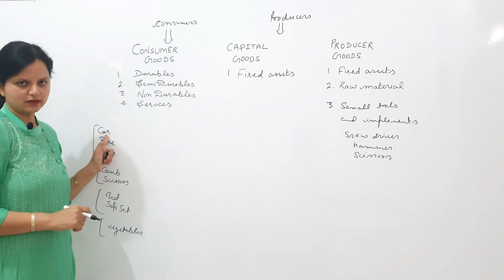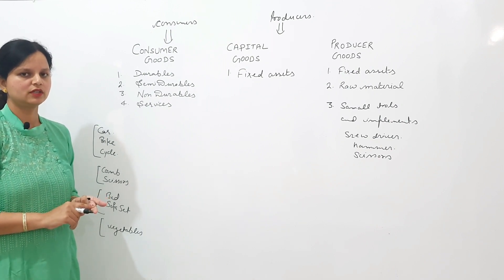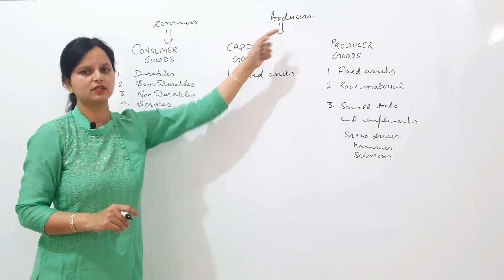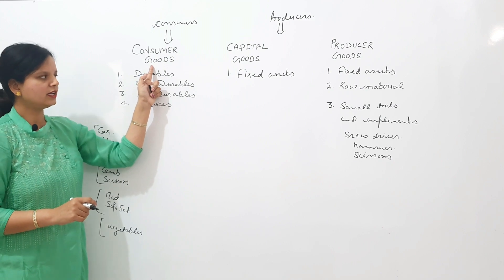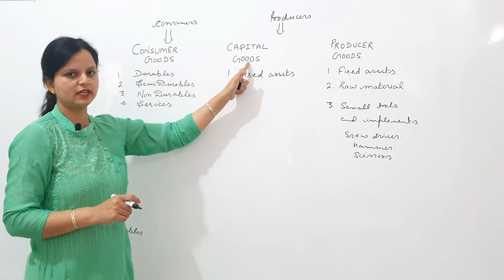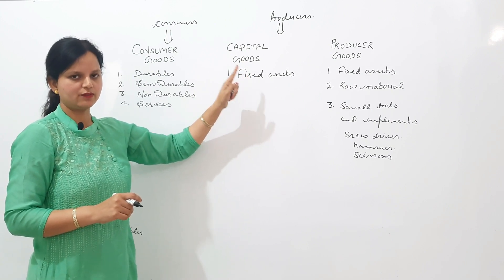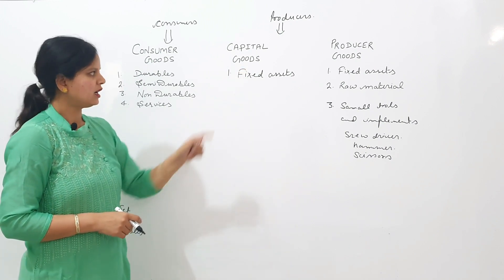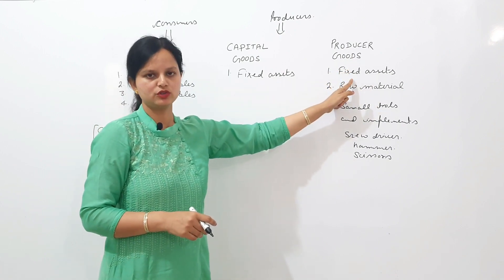Here are some examples. The first example is car. Whether a car is a consumer good, capital good, or producer good depends on the end user. If a car is purchased by a consumer, then it is a consumer good. And if a car is purchased by a business unit, it is a capital good — it is a fixed asset. Like if a car is purchased by a taxi driver or a tourism company, then it is a capital good. And all capital goods are producer goods too, so the car is also a producer good.